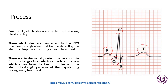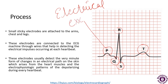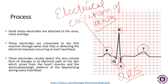The ECG waves are represented as P, Q, R, S, and T. Each represents a specific activity of the heart. The P wave represents the electrical excitation of the atria, or depolarization, initiating the atrial contraction. The QRS complex represents depolarization of the ventricles, which initiates ventricular contraction, marking the beginning of systole.